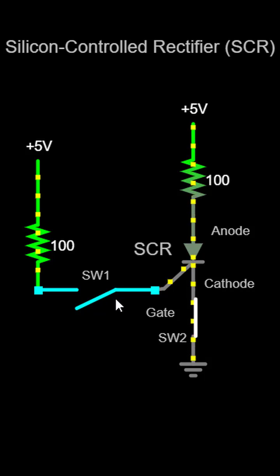Once triggered, the SCR remains conducting, even if the gate signal is removed, until the current falls below a certain level or the power supply is interrupted.